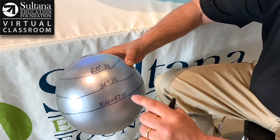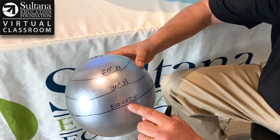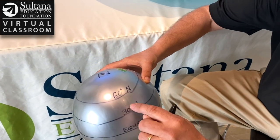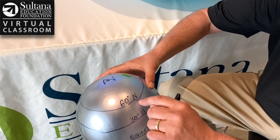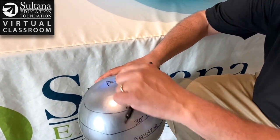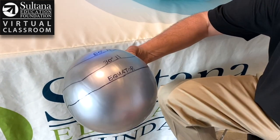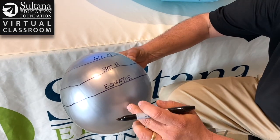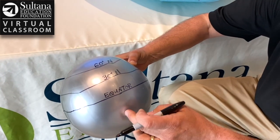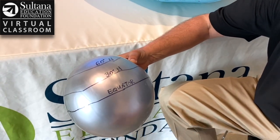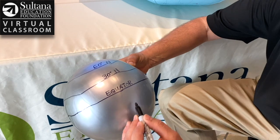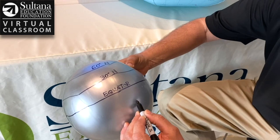What I've done here is draw the equator and label it. I have my 30 degree north latitude line and my 60 degree north latitude line up to the north pole. Now I'm going to do that same thing south of the equator — these would be my southern latitudinal lines.